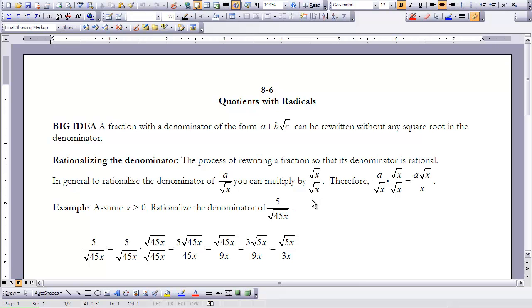We know we can multiply by 1 and not change the value. So if I do that, a over the square root of x times the square root of x over the square root of x will equal a times the square root of x over x, because the square root of x times the square root of x is the same as x. So now we end up with a value that looks like this.